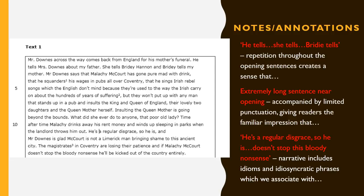So how do I show you what sort of things we should be annotating and looking for in a text? Here's the opening paragraph. And I just thought I'd look at three examples of language. The first one is this repetition of 'he tells, she tells, Bridey tells.' Clearly, McCourt's trying to create a sense of gossip, and if we're sensitive to that, we should be able to pick that up very, very easily.